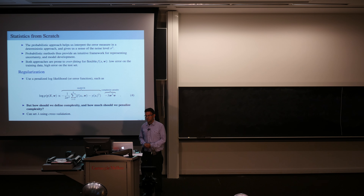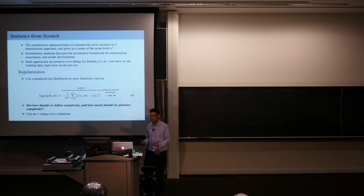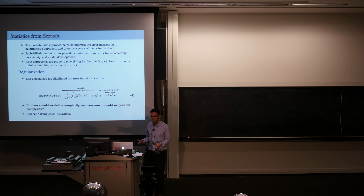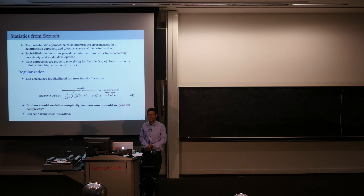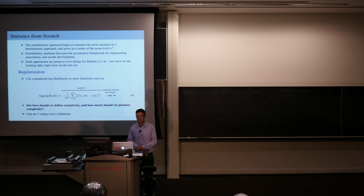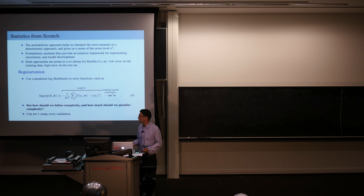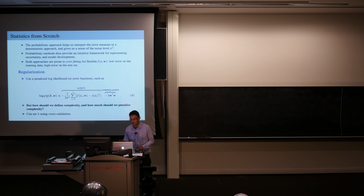We can remedy overfitting with regularization: a penalized objective function with a model fit term plus a complexity penalty, tuning λ through cross-validation. This has drawbacks — we don't necessarily know what complexity is, it can be hard to know how much to penalize it, choosing validation sets is tricky, and it can be computationally intensive with many regularization parameters. We can trivially set λ = 0 to optimize, which is why cross-validation is needed.